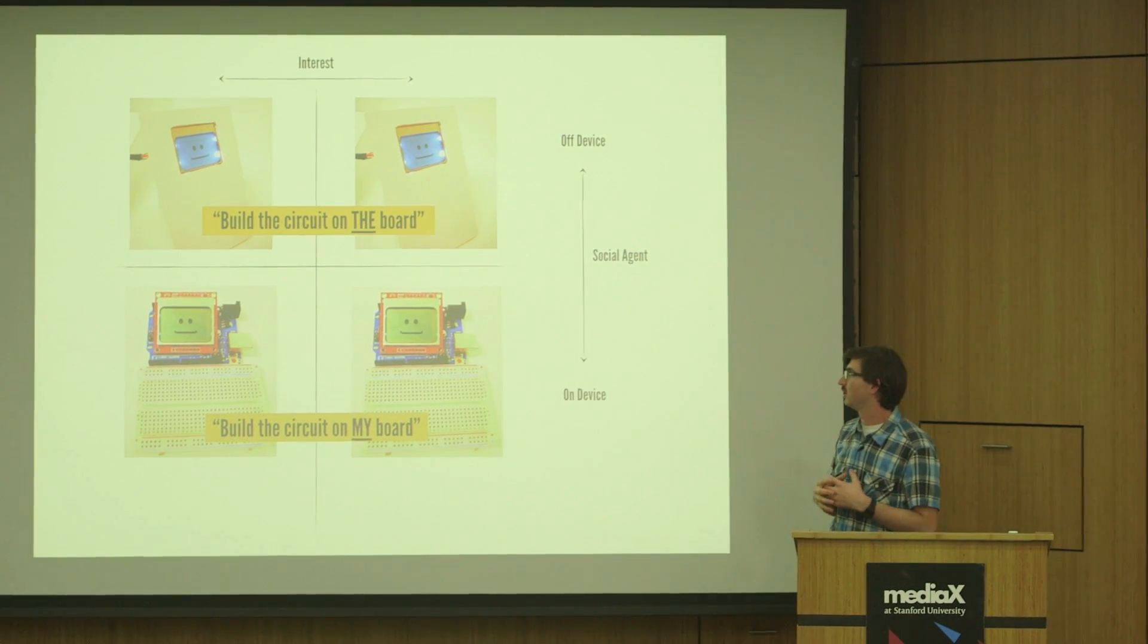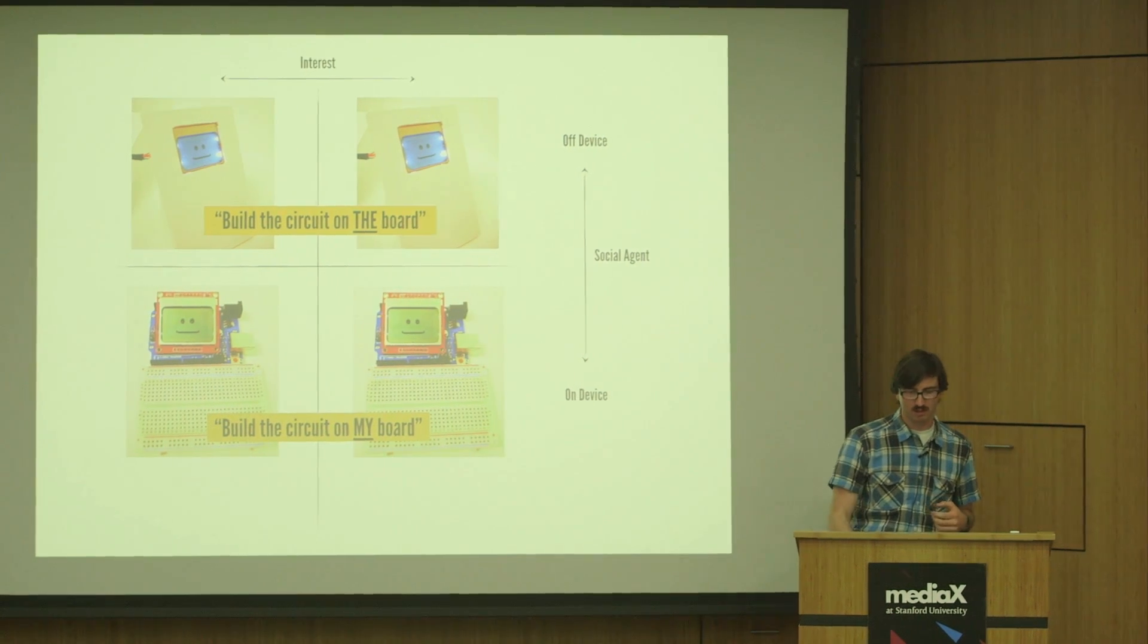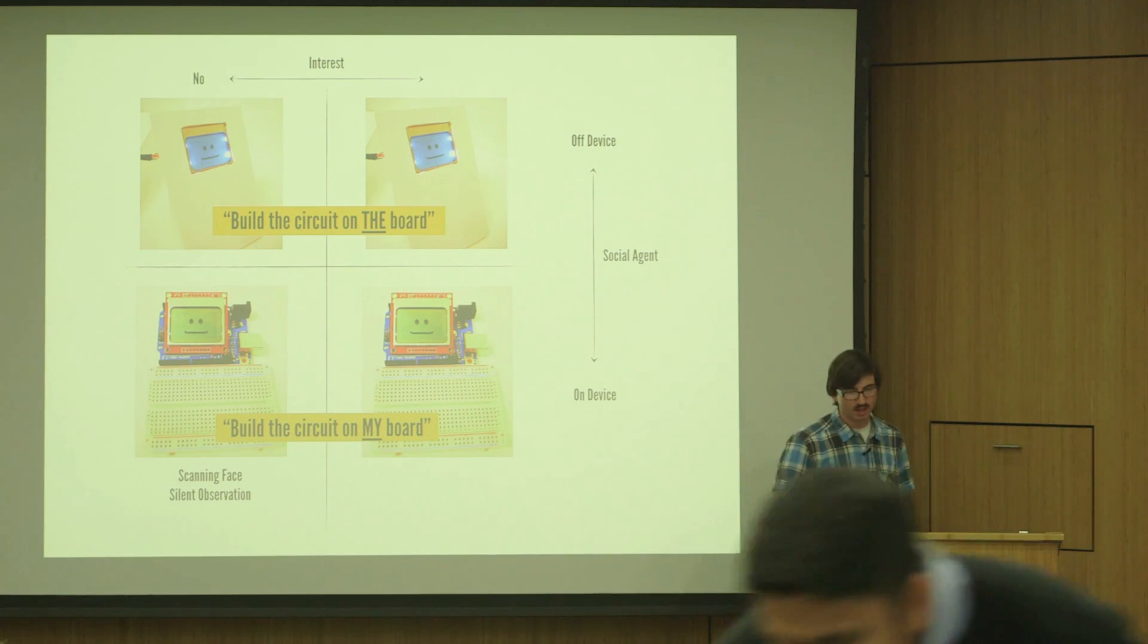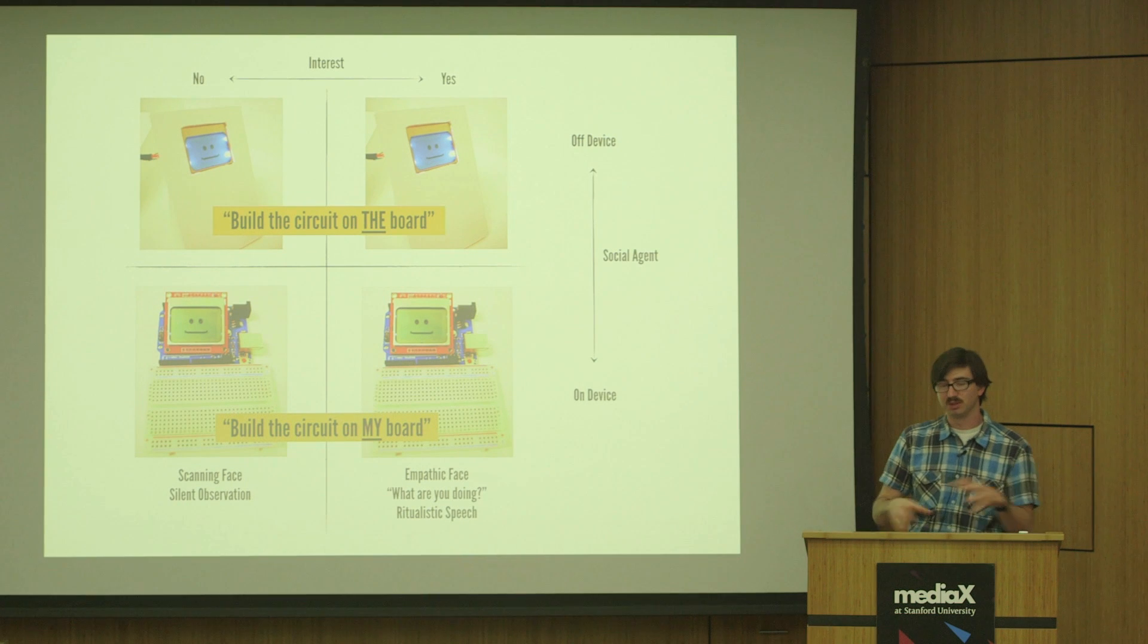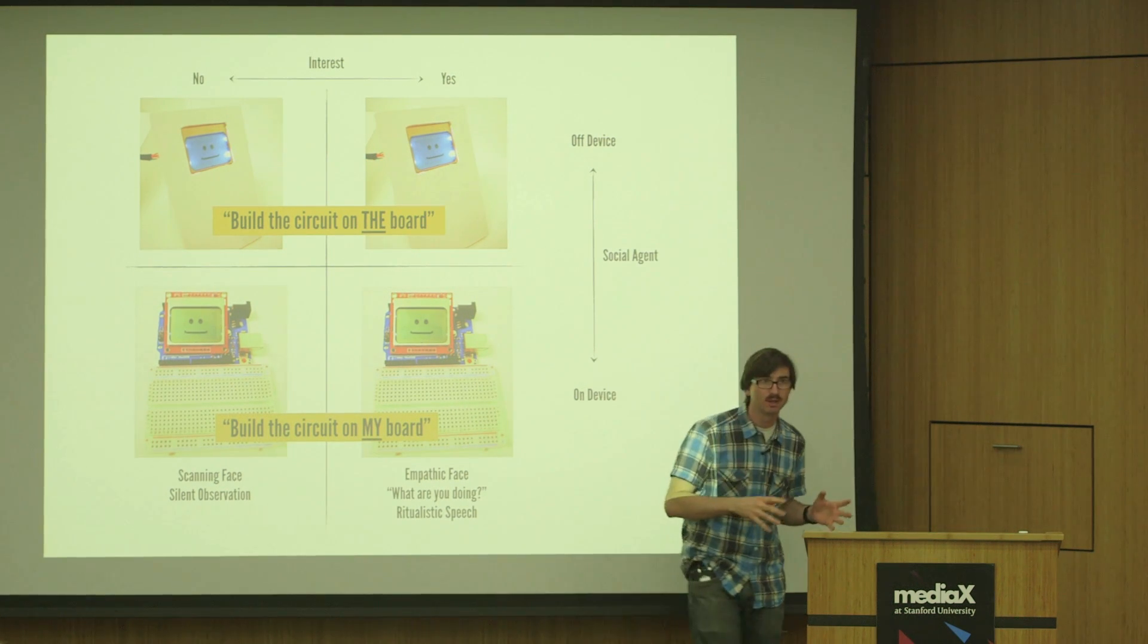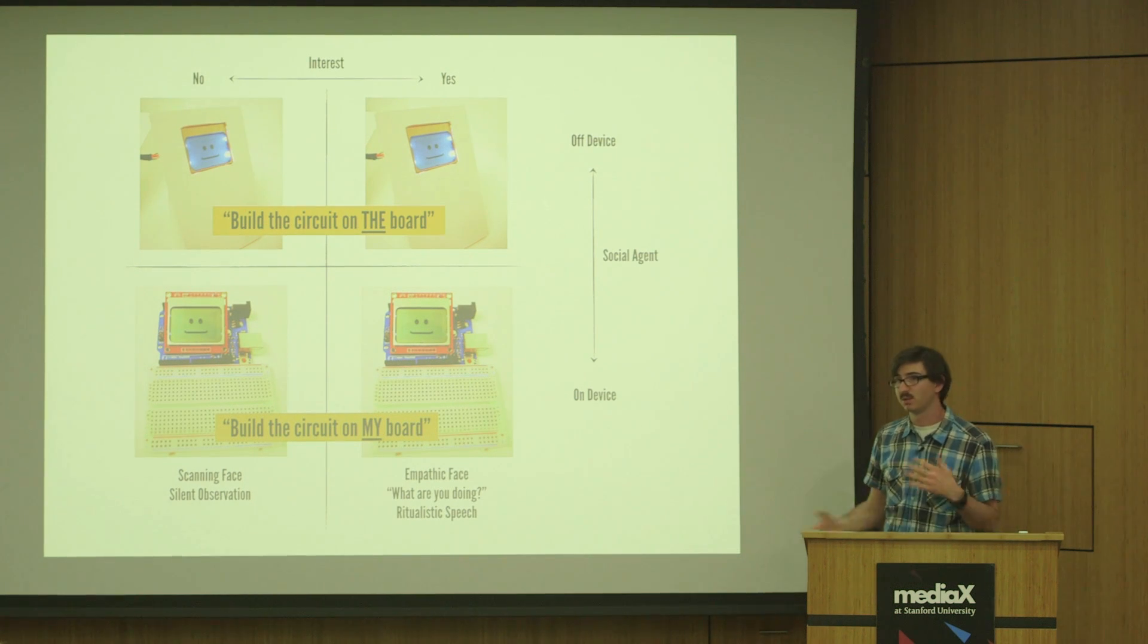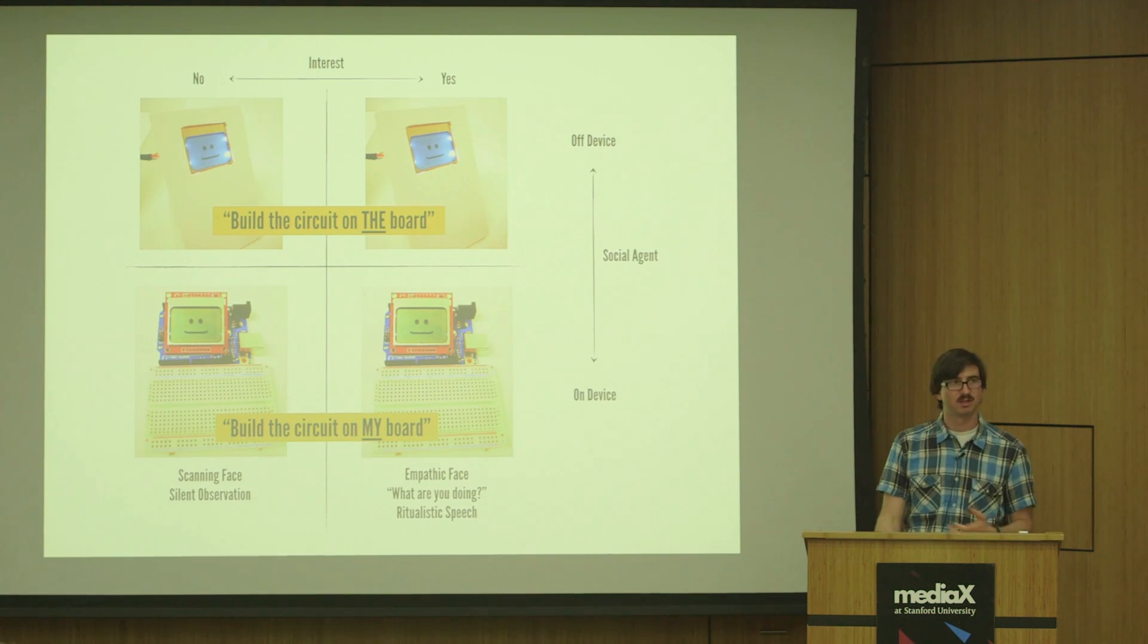In a different axis, we actually wanted to play with the idea of an interested device, something that cared about the student. So in one case, the device wasn't very interested. The face would scan around randomly. There was no rhyme or reason, really. It would observe the student silently while they were building an LED tutorial. And then in another condition, we'd actually have them with this empathic face, something that would follow them as the user would look around the environment. If the user smiled, it would smile. It would ask things like, what are you doing? It would have a form of ritualistic speech. So if the student said something, it might say, cool, tell me more. That sounds interesting.